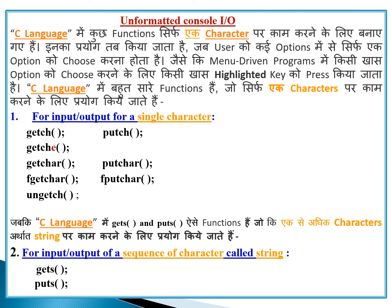In C language, getch and putch work with one character. When we deal with a string, meaning more than one character, there are two functions — gets and puts — which handle more than one character. This means we are now learning the functions of gets and puts for input and output of a sequence of characters, that is, for string input and output.